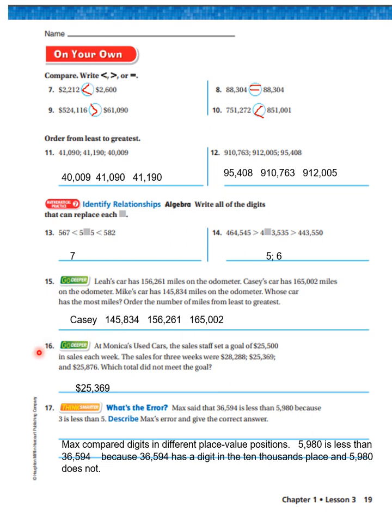It says, at Monica's used cars, the sales staff set a goal of 25,500 in sales each week. The sales for three weeks were 28,288, 25,369, and 25,876, which total did not meet the goal. They wanted 25,500. It would be 25,369.